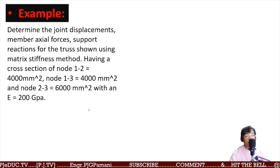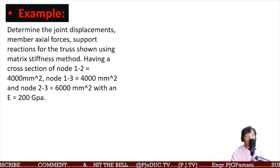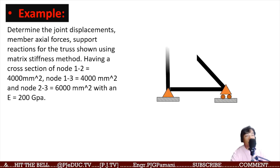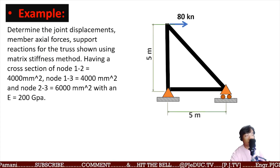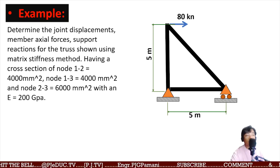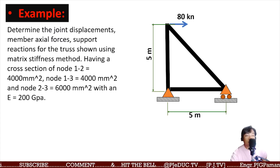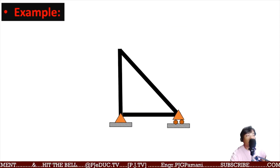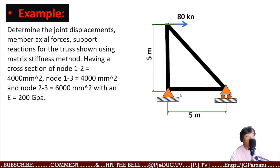In continuation, we are now asked to determine the joint displacements, member displacements, member axial forces, and support reactions for the truss shown using the matrix stiffness method. The truss has cross sections: node 1 to 2 of 4000 mm², node 1 to 3 of 4000 mm², and node 2 to 3 of 6000 mm², with a modulus of elasticity of 200 GPa. There is a horizontal force of 80 kN, a vertical member of 5 meters, a horizontal bottom member of 5 meters, and a roller support.